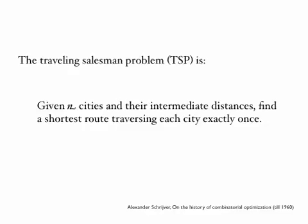The traveling salesman problem, sometimes abbreviated TSP, is given N cities and their intermediate distances, find the shortest route traversing each city exactly once. I'll now explain in a little bit more detail what this means.